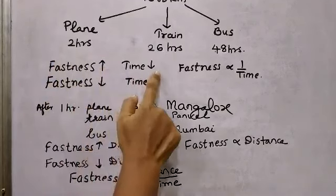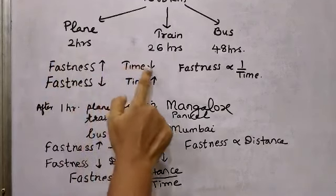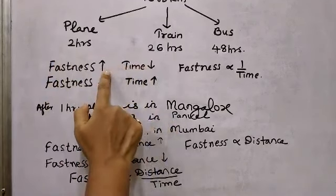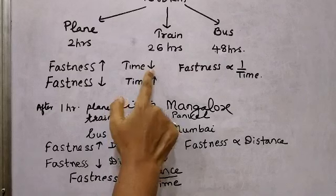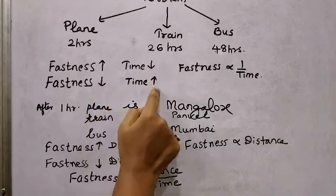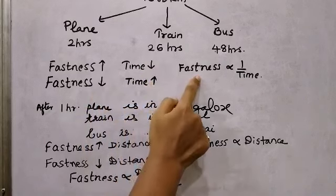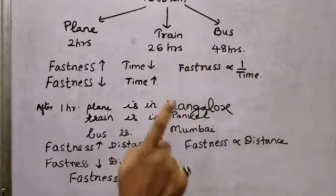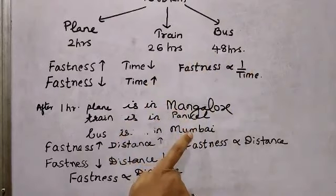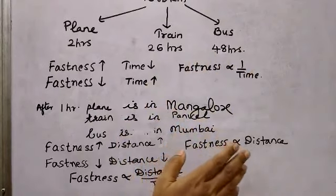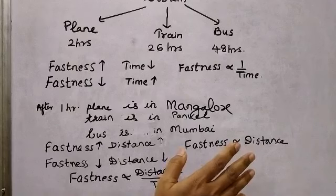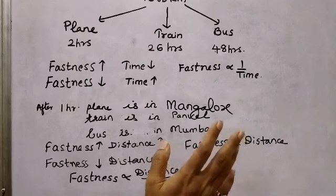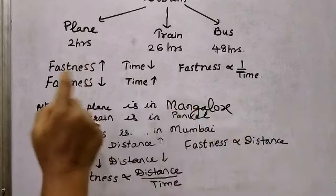Fastness is inversely proportional to time. As fastness increases, time decreases, and as fastness decreases, time increases. So fastness is inversely proportional to time. Now let's keep the time constant.